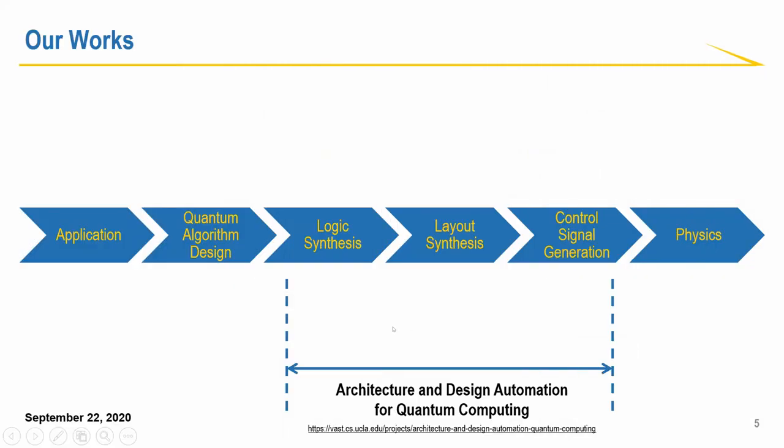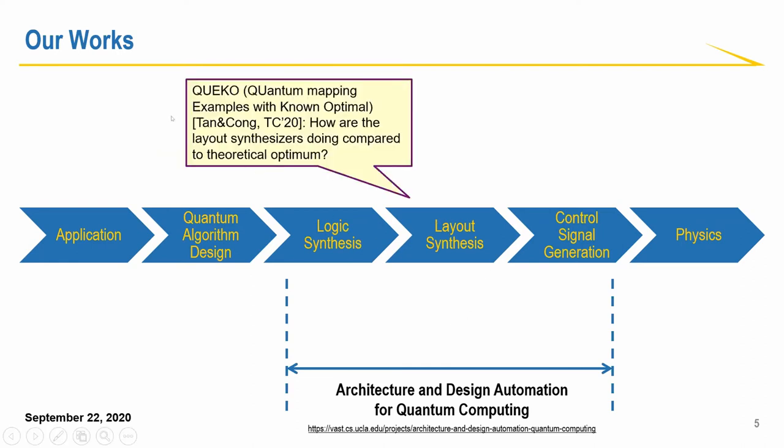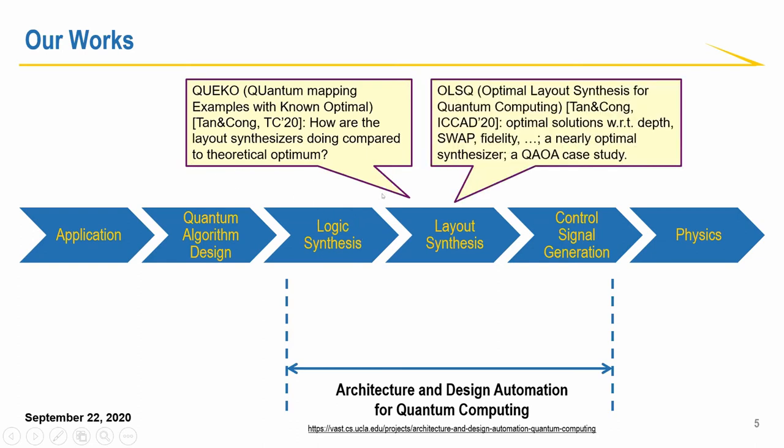The two works that I'm presenting today are all about layout synthesis. The first work, QUEKO, is quantum mapping examples with non-optimal. The intuition here is that we want to measure how are the current tools doing compared to theoretical optimum. Why is this important? Because we want to probe how further ahead can we improve these tools. Previously, we could only compare within the tools. So we want to know their performance compared to theoretical optimal. That is pretty hard because we actually proved that the LSQC problem is NP complete in general. So the task is to construct a specific set of benchmarks that we know the optimal and they're also non-trivial. Then we can evaluate the tools with them. After we derived those results, we went on to improve the tools ourselves.